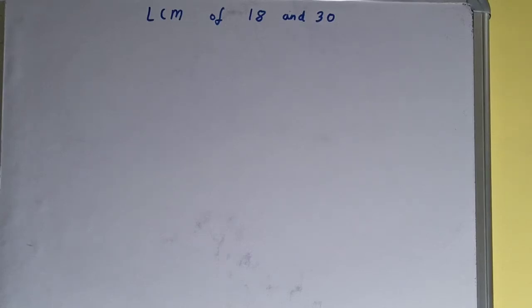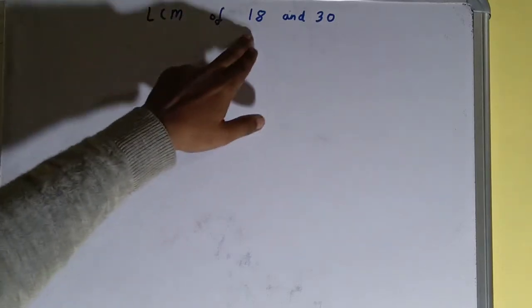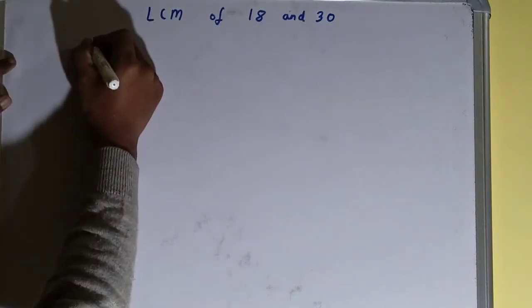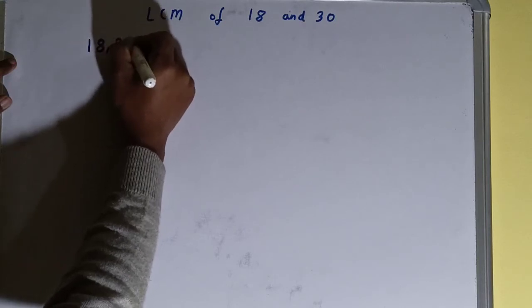Hello friends, and in this video I'll be helping you with the LCM of the numbers 18 and 30. So let's start. To find it out, we first need to write both the numbers like this: 18 comma 30.